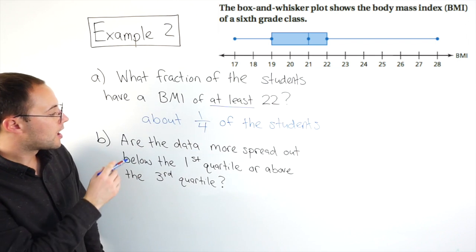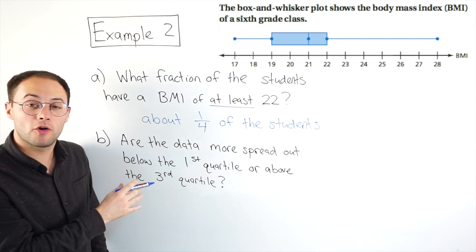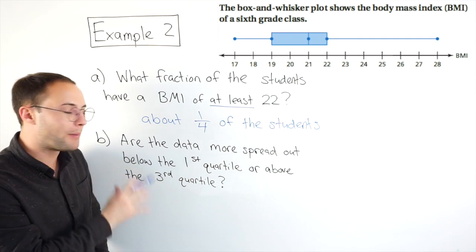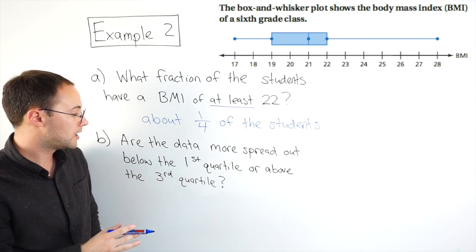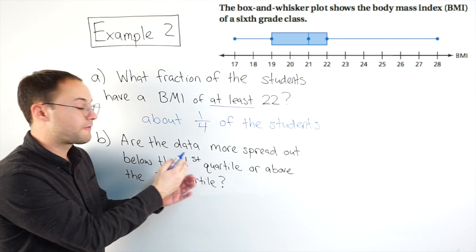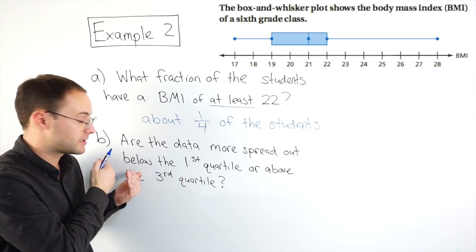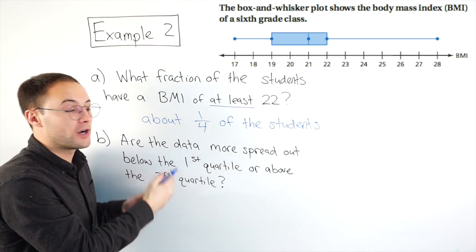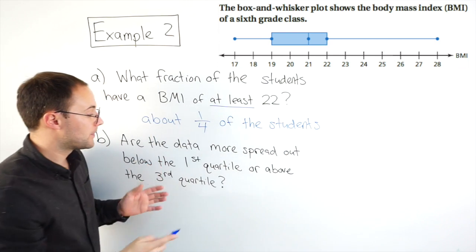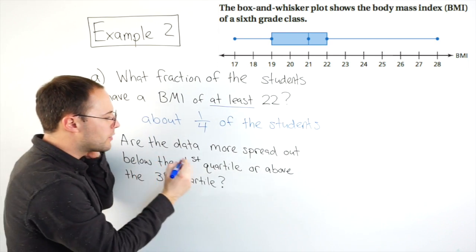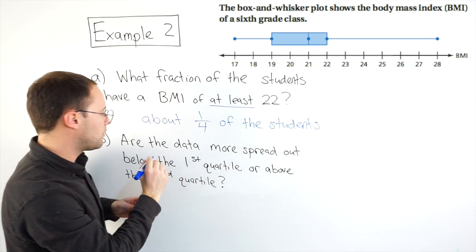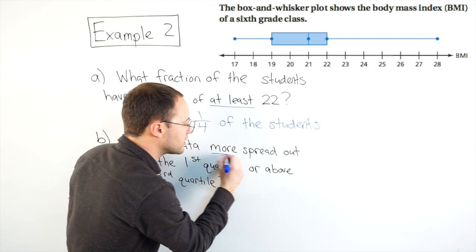Let's look at B. Are the data more spread out below the first quartile or above the third quartile? So below the first quartile, well, that's that left whisker, that lower whisker. And above the third, well, that's the right whisker. So how can we tell which one, where the data is more spread out?